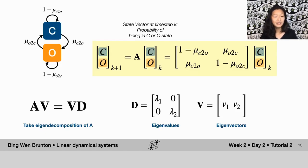If we go back to our probabilistic model of closing and opening ion channels and take the eigen decomposition of this A matrix here, what you're going to get are, because this is a two by two system, you're going to get two eigenvalues and two eigenvectors.